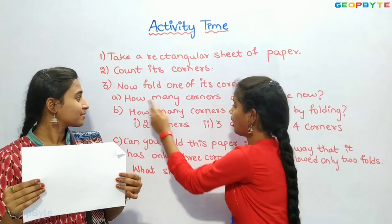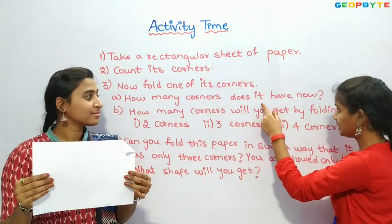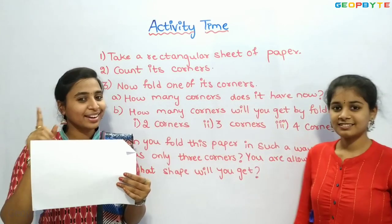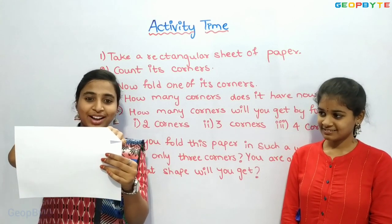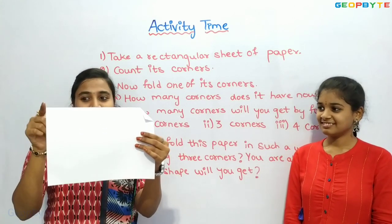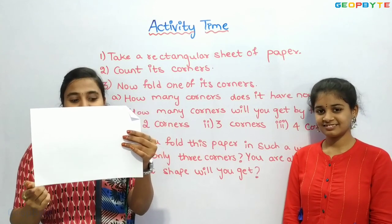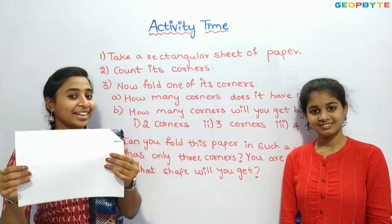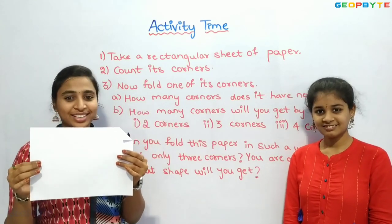How many corners does it have now? Let us count — one, two, three, four, five. It has five corners.